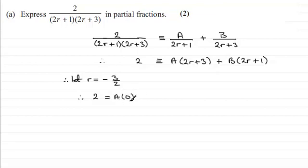0, well that's going to be 0, takes out the A. And then we've got plus B times, and then -3/2 times 2 is going to be -3 plus 1 is -2. And so therefore we've got 2 equals -2B. And dividing both sides by -2 means that B is going to equal -1.